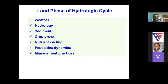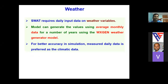SWAT involves two basic components: the land phase of the hydrologic cycle — which includes the amount of water, sediment, nutrient, and pesticide loadings to the main channel in each sub-basin — and the routing phase, which defines the movement of water, sediments, and nutrients through the channel network to the outlet. The land phase includes weather parameters such as precipitation, temperature, solar radiation, relative humidity, and wind speed, plus hydrologic components like streamflow, evapotranspiration, groundwater recharge, return flow, percolation, and infiltration.